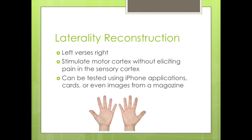Practicing laterality helps restore the brain's concept of left and right by imagining your hand in that position through mirror neurons in the brain. This can be tested by using various iPhone applications, laterality cards that come with some of the mirror therapy kits, or even images from a magazine. One app that's really great is called Orientate — it's a free app you can download straight to your phone, and it gives you the results as well.